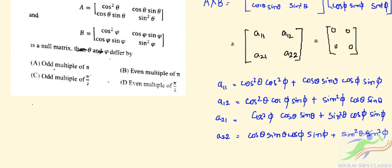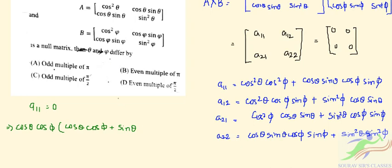So we can equate these to zero. If we set a11 = 0, then taking cosθ cosφ common, we can write it as cosθ cosφ · (cosθ cosφ + sinθ sinφ) = 0, which is nothing but cos(θ - φ) = 0.